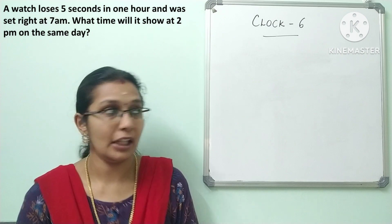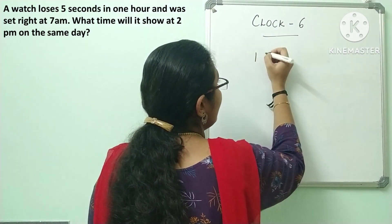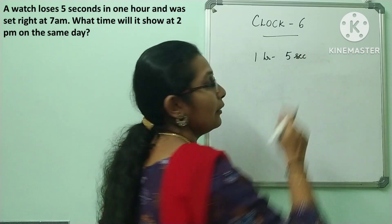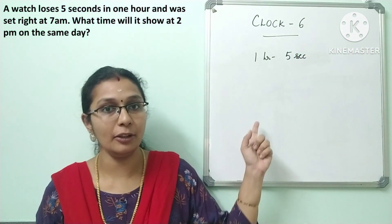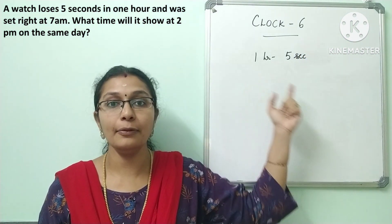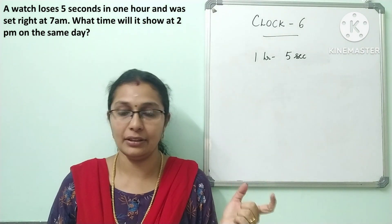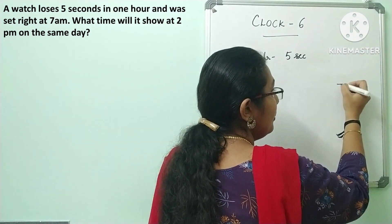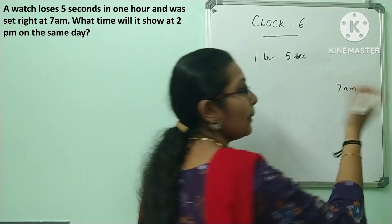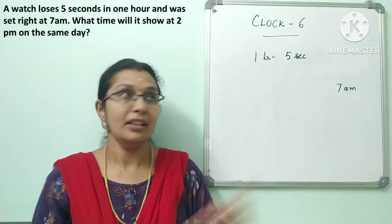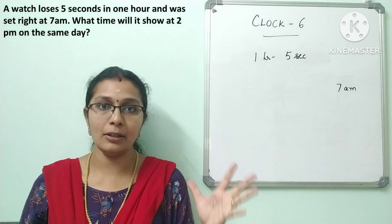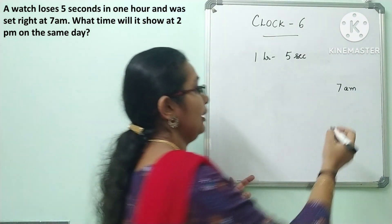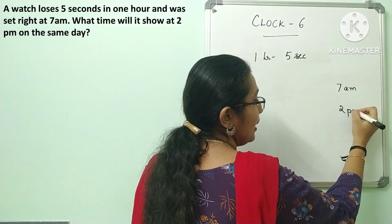A watch loses 5 seconds in 1 hour — be careful not to confuse seconds and minutes. It was set right at 7 am. Now at 2 pm on the same day, from 7 am to 2 pm is 7 hours. In each hour 5 seconds are lost. What is the time of loss difference?